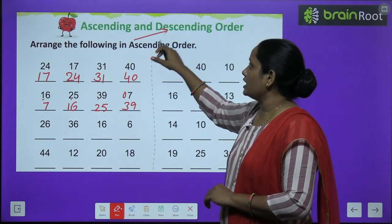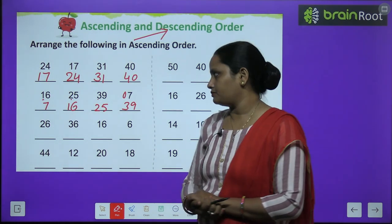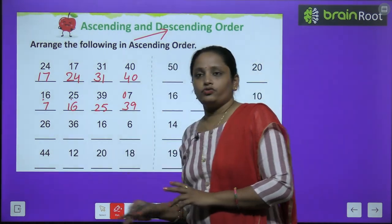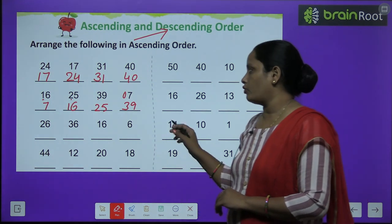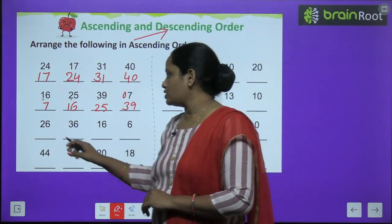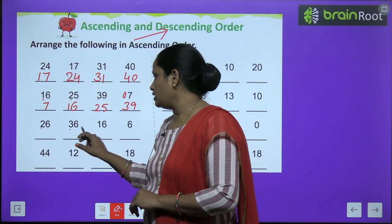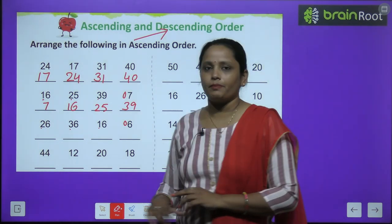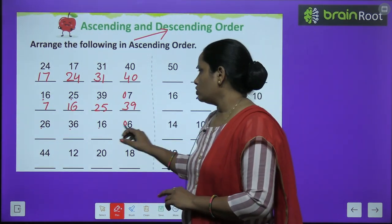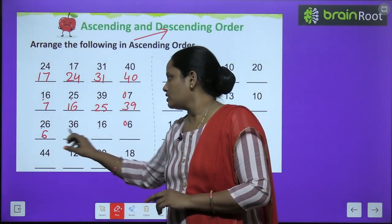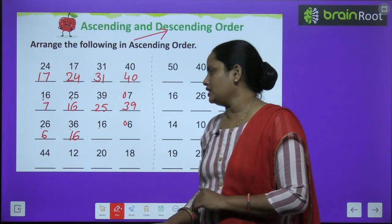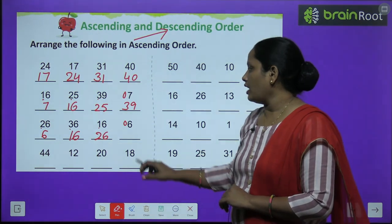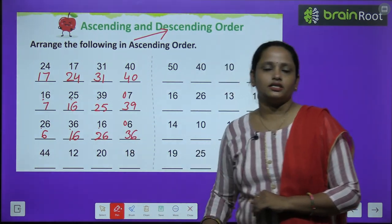Toh humne kya kiya? Ascending mein karna hai, means chhote se bade ki taraf jaana hai. Toh sabse chhota hai seven. Phir sixteen hai usse bada. Phir hai twenty-five usse bada. Aur phir hai thirty-nine. Next one: two, three, one. And then zero kyunki six hai yahan pe akela. Toh sabse pehle likhte hain six. Phir likhte hain one, six: sixteen. Phir likhte hain two, six: twenty-six. And phir likhenge three, six: thirty-six.